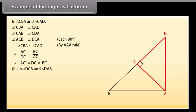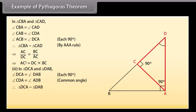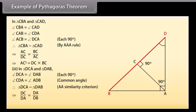Part 3: In triangles DCA and DAB, angle DCA = angle DAB (each 90°) and angle CDA = angle ADB (common angle). Therefore triangle DCA ~ triangle DAB by AA similarity criterion. This gives DC/DA = DA/DB, which implies AD² = BD × CD.